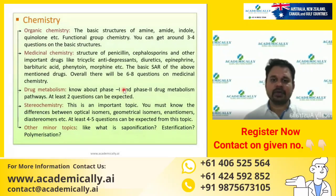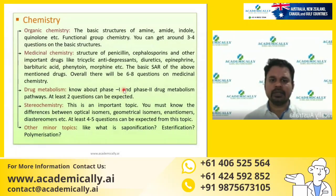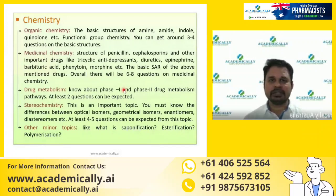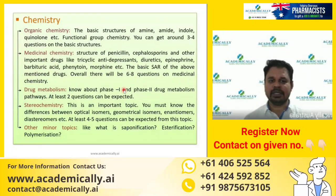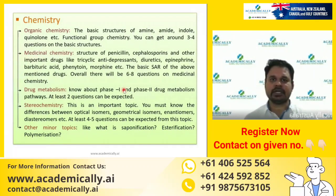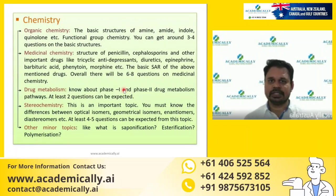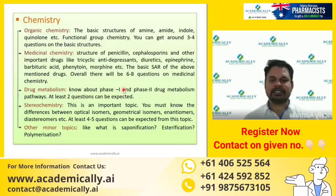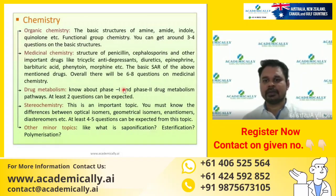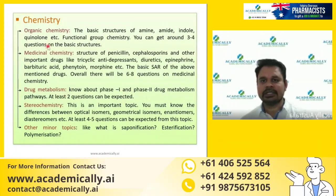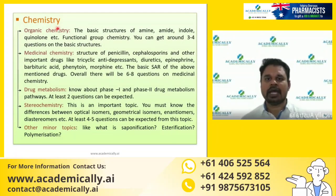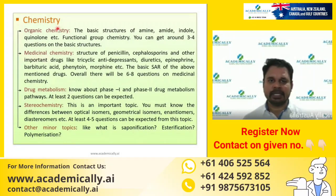Stereochemistry is an important topic — expect around two or three questions on isomers, geometrical isomers, and enantiomers. Other minor chemistry topics include esterification, polymerization, and saponification. All of these fall under the chemistry section.